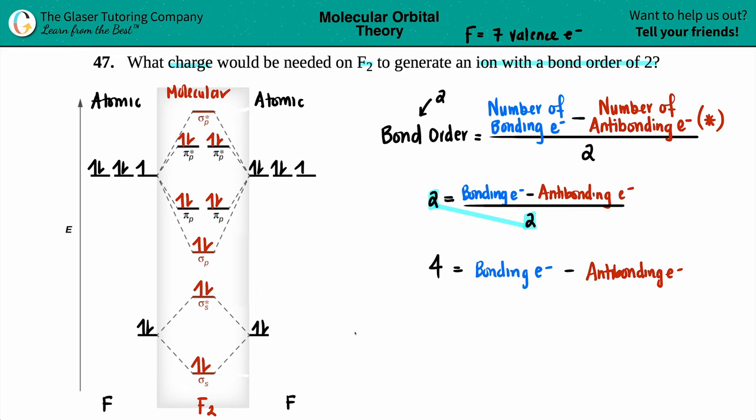So for a neutral F2, you have how many bonding electrons? Remember, it's all the ones that have no star. So I have two, four, six, eight electrons. So I have eight bonding electrons.